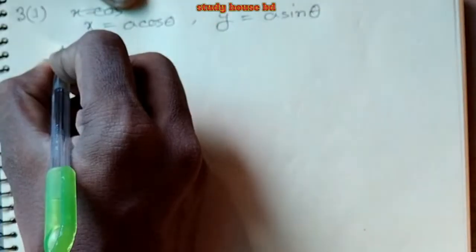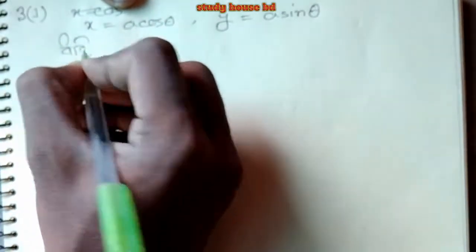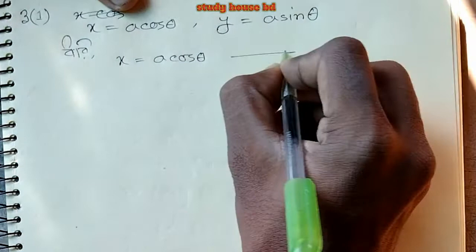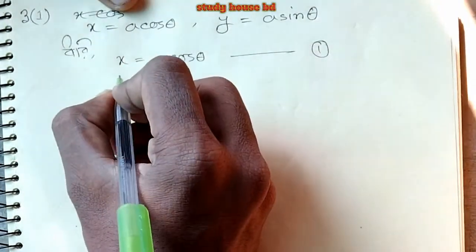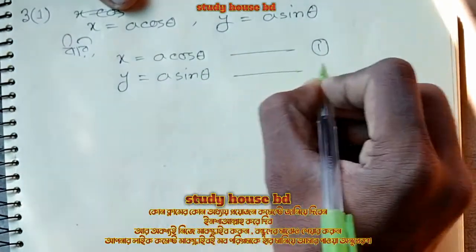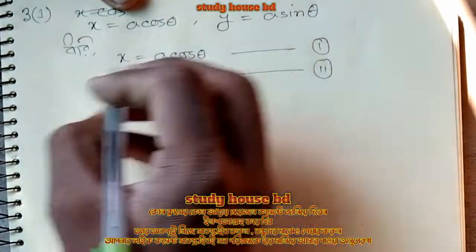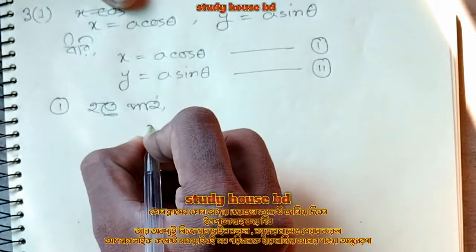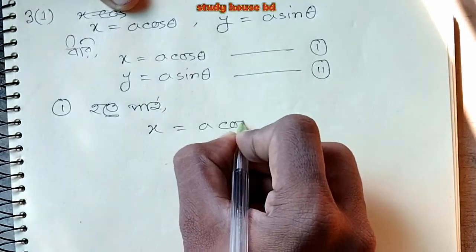Assalamualaikum. I am going to show you problem 9.2 and 3. x equals a cos theta, theta equals 0.2. I will show you 1.2. x equals a cos theta.